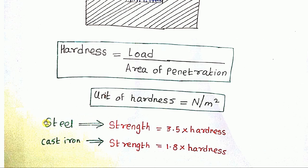Also, as a fact, in case of steels, the strength is 3.5 times the hardness. And in case of cast iron, the strength is 1.8 times the hardness.